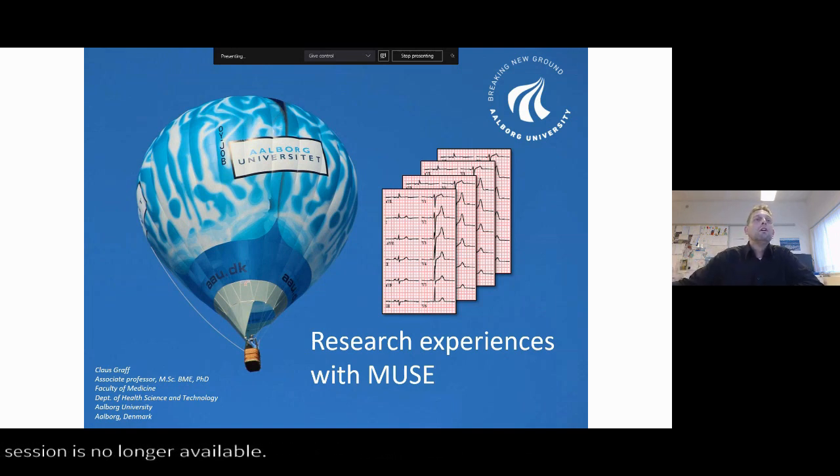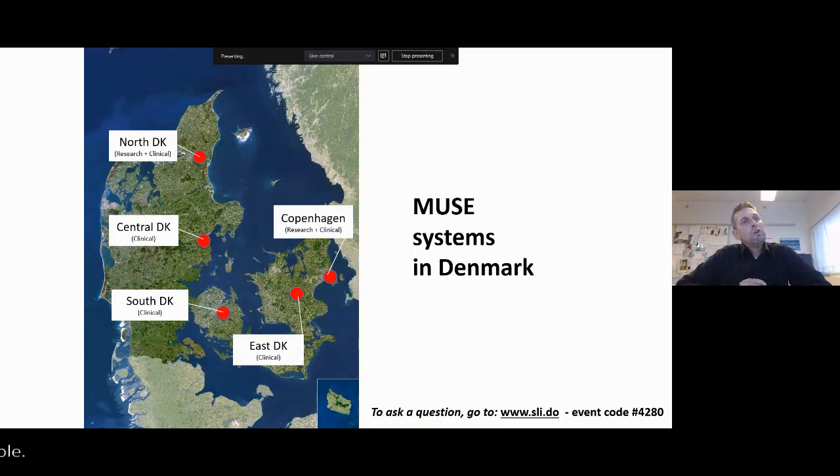So let me first start by drawing up the landscape of MUSE systems that we have in Denmark. Denmark is divided into five regions and each region feeds ECG data into its MUSE system. Some regions, like the northern part where I'm located, have both a research MUSE and a clinical MUSE at the university. And our capital region of Copenhagen also has two MUSE systems.